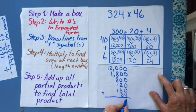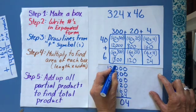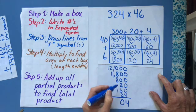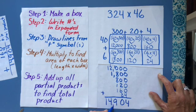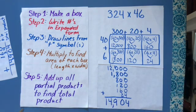So I get 4, 10, 16, 17, 18, 19, 4, and 1. So I got 14,904.